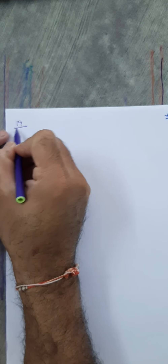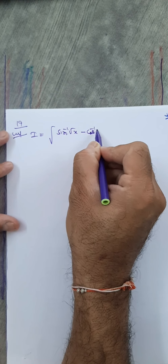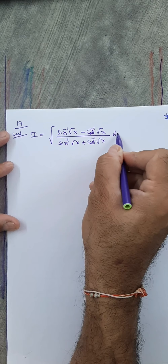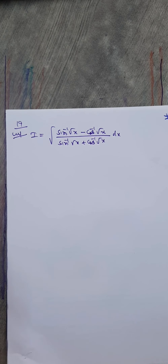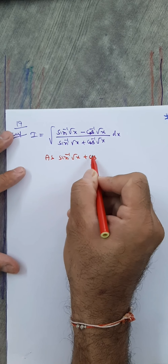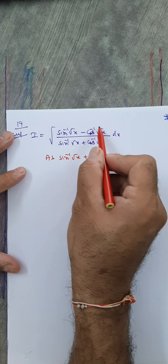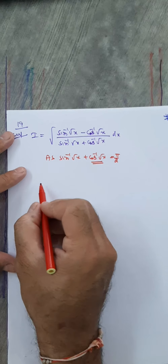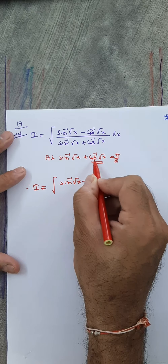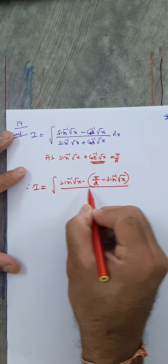Question number 19: I equals integral of (sin⁻¹√x − cos⁻¹√x) upon (sin⁻¹√x + cos⁻¹√x). Using the identity sin⁻¹x + cos⁻¹x = π/2, the denominator becomes π/2. Also, cos⁻¹√x can be written as π/2 − sin⁻¹√x. Substituting both, the expression becomes (2/π) times (2 sin⁻¹√x − π/2) dx.